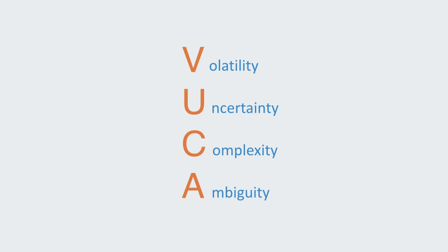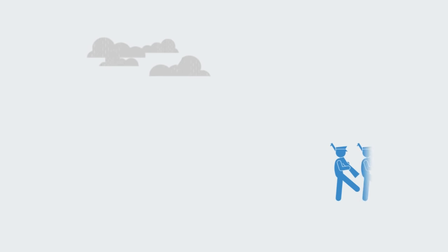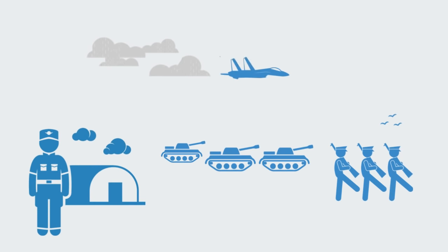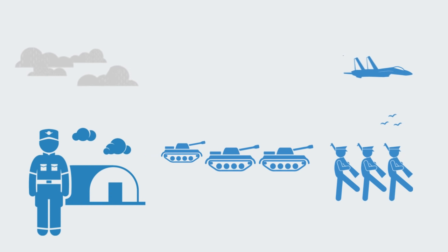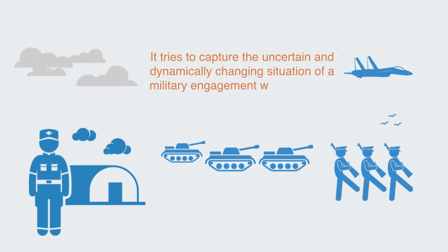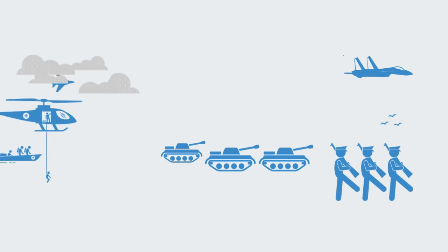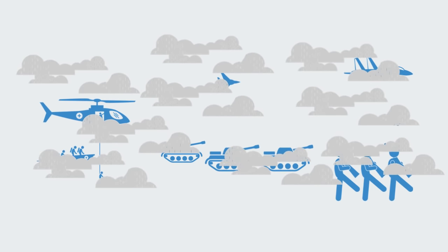The common usage of the term VUCA began in the 1990s and derives from military vocabulary, where it refers to the experience of officers in operations. It tries to capture the uncertain and dynamically changing situation of a military engagement, where there is lack of information. Events often happen in a chaotic and unpredictable fashion, in what is called the fog of war. Military commanders sometimes describe this as being in a world of unknown unknowns. This is the extreme version of a VUCA world.